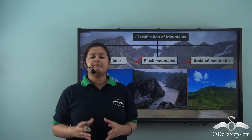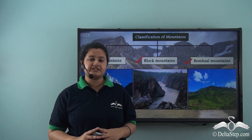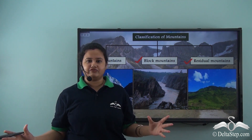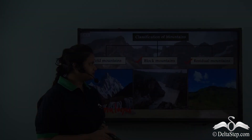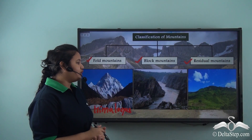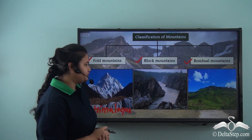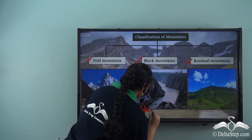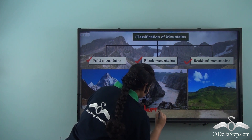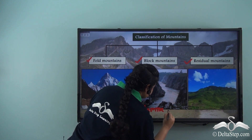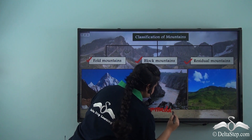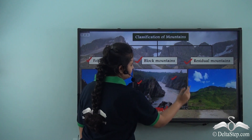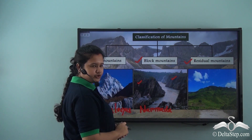Block mountains are formed when a part of land subsides or is raised up when two tectonic plates diverge. Here we have the picture of a block mountain. This is the picture of Narmada Rift Valley, and here we have two block mountains: Vindhyas and Satpura Ranges.